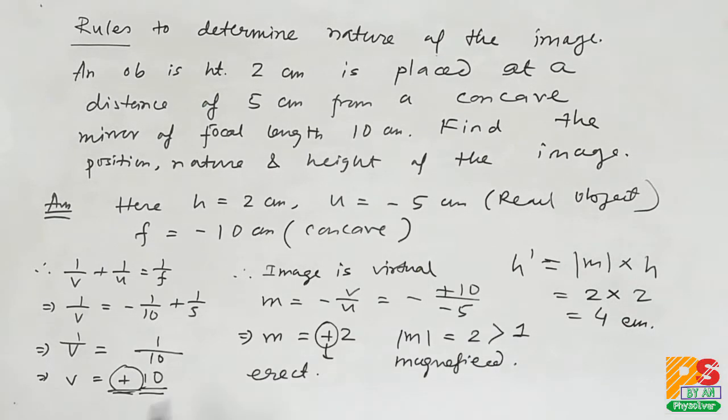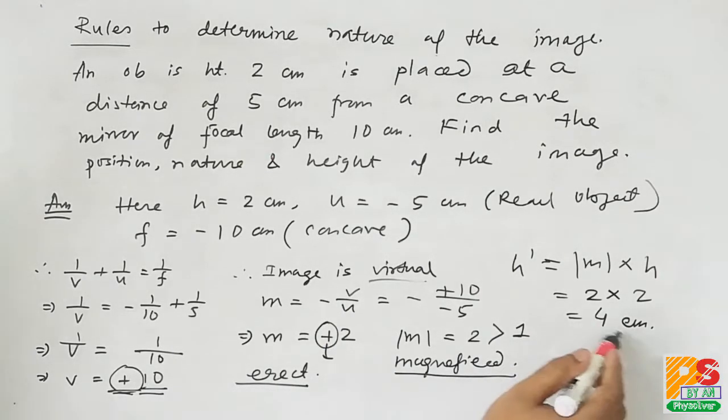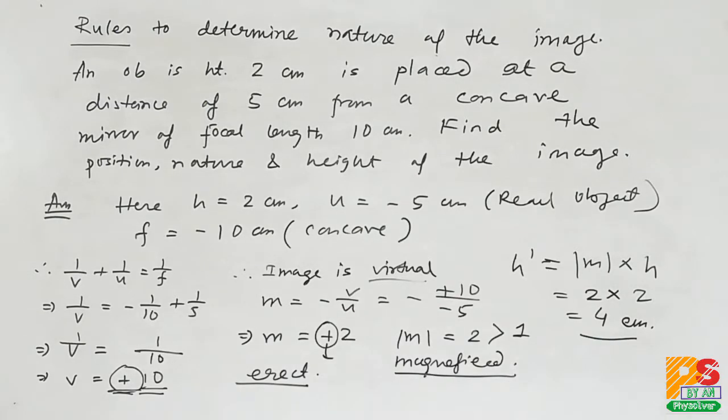Therefore, the image position is 10 cm from the pole. The nature is virtual, erect, magnified and height of the image formed is 4 cm.